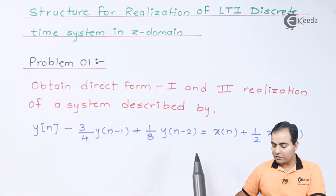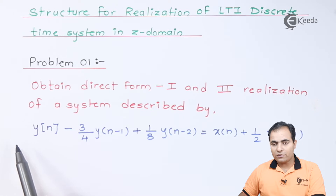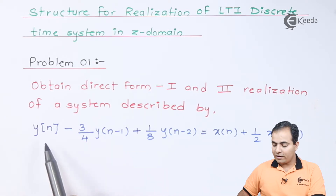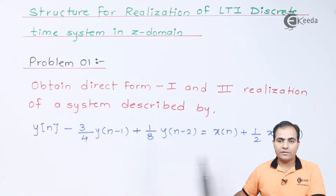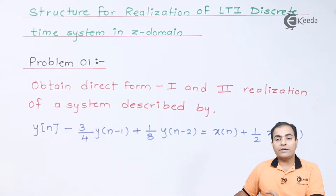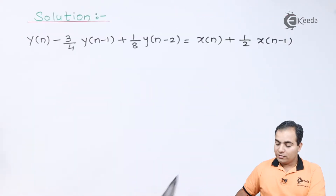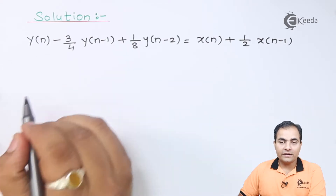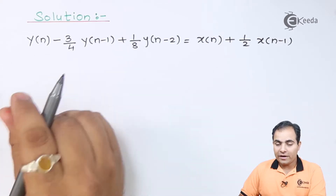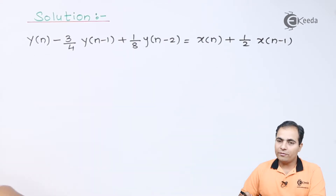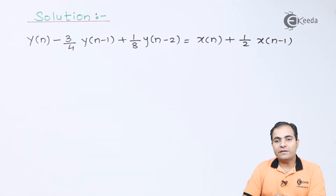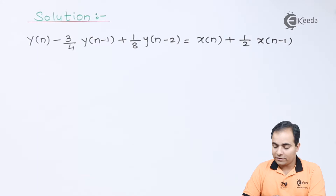How to get the transfer function? Simply apply the Z transform on both sides so that you get Y(z) and X(z) on both sides. Then take Y(z) and X(z) as common factors, and you will get the answer in transfer function form. We need to represent the equation in the form of the transfer function.